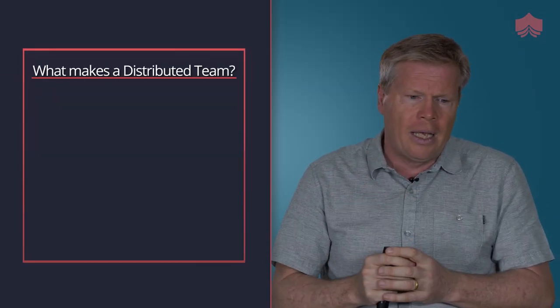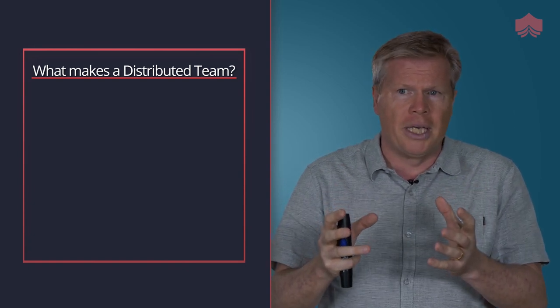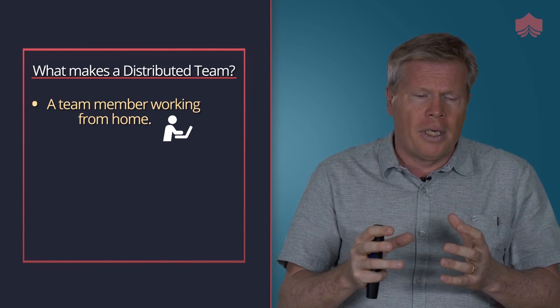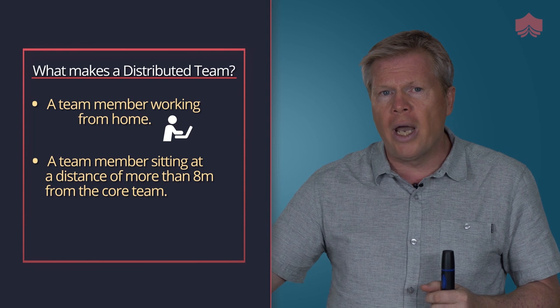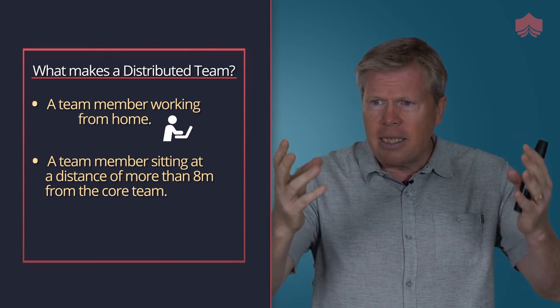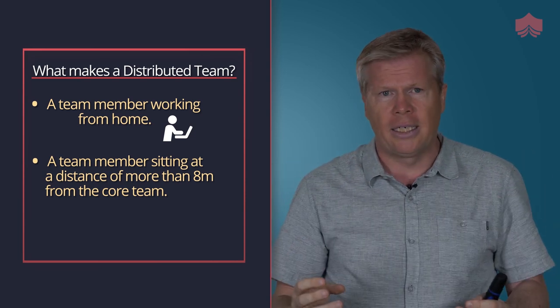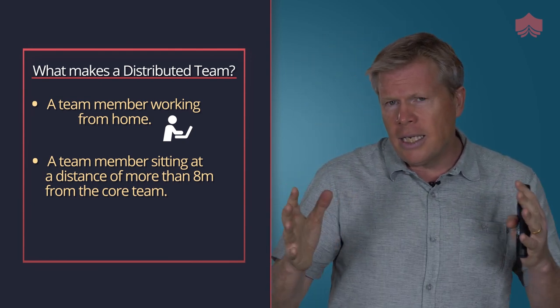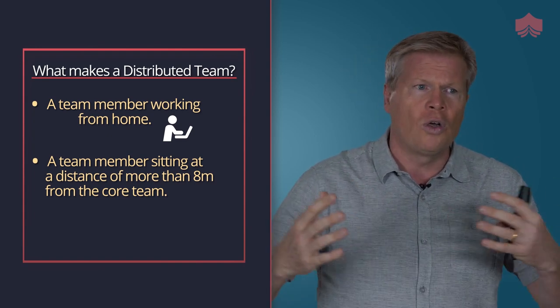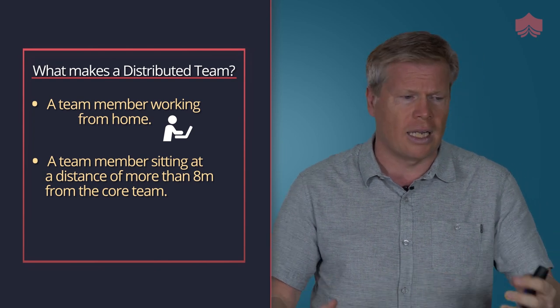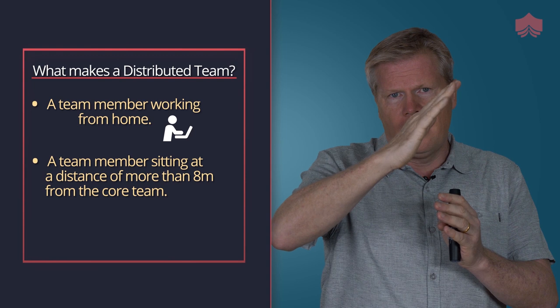Let's take it one step away, and that one step away is going to surprise you — because a distributed team becomes a distributed team if you've got one member working from home, or if you've got a team member that is greater than eight meters away from the core team. At eight meters away I can still see them, still have eye contact, still get up off my chair and say good morning, meet them at the water cooler. It's not ideal, but it's a tick — it's a tick downwards.